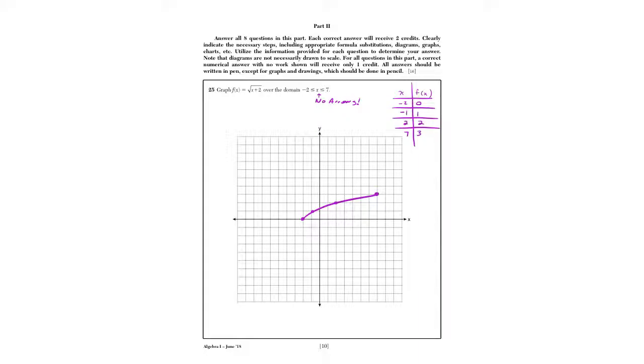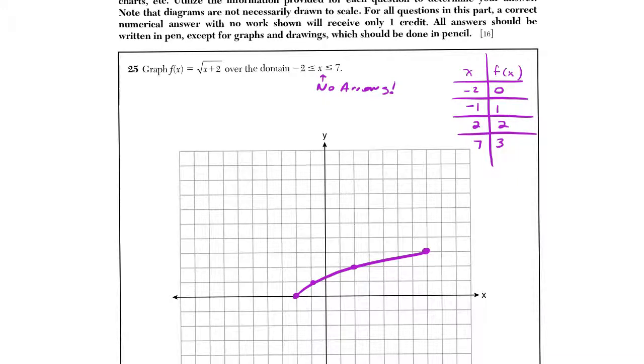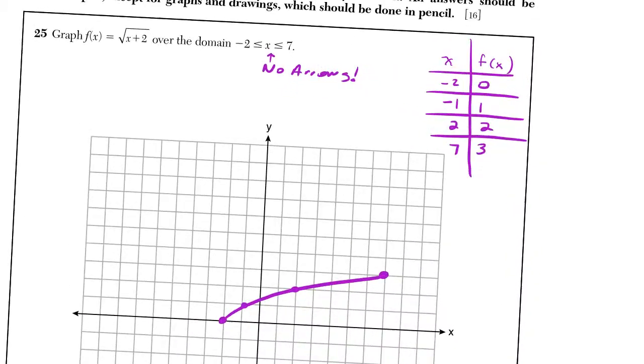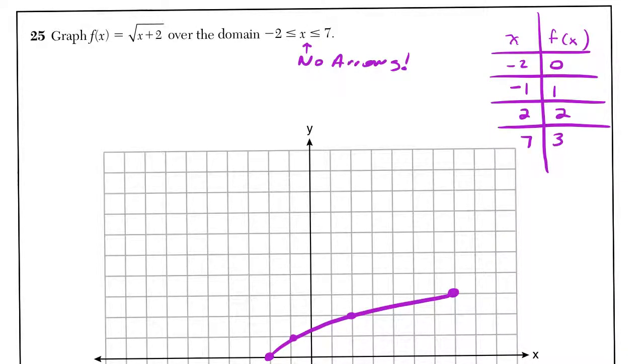So for 25, we were asked to graph the function f of x, which was a square root graph. It was radical x plus 2. Things we wanted to do here to answer this question. Obviously, you could see work-wise, I'm using a table of values.